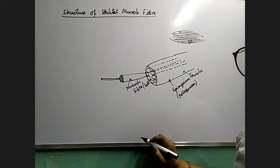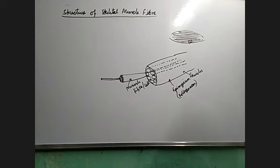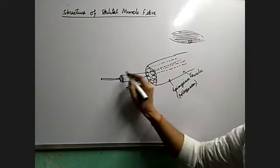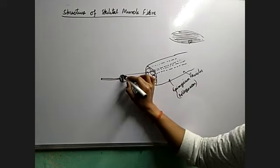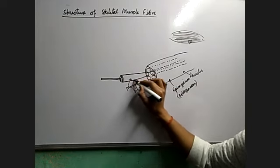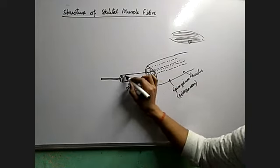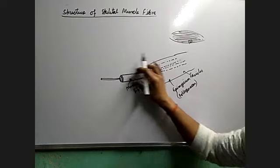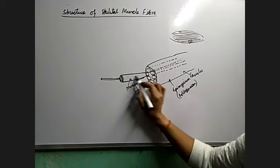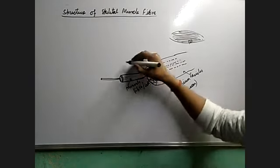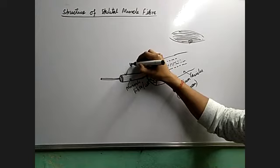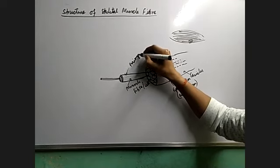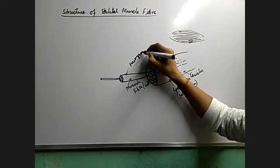The muscle cells remain enclosed with another collagenous covering. This covering around the muscle cells is known as perimysium.